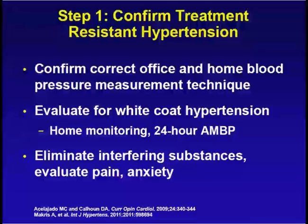Confirmation of resistant hypertension basically involves using office and home blood pressure measurement techniques. We need to evaluate for white-coat hypertension, we need to evaluate interfering substances — the long list of drugs I mentioned — and we need to exclude pain and anxiety.